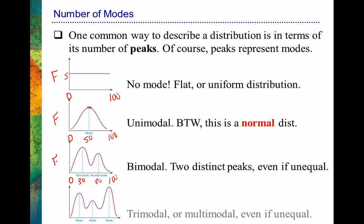Here's a distribution we would call trimodal, because we can count three peaks: one peak where lots of people scored really low, one in the center, and one where lots of people scored really high. So it's trimodal, or maybe multimodal. Even if the peaks are somewhat unequal, we're just trying to find actual peaks that are sticking out. If I told you I found a multimodal distribution, you should be picturing something like this in your head.